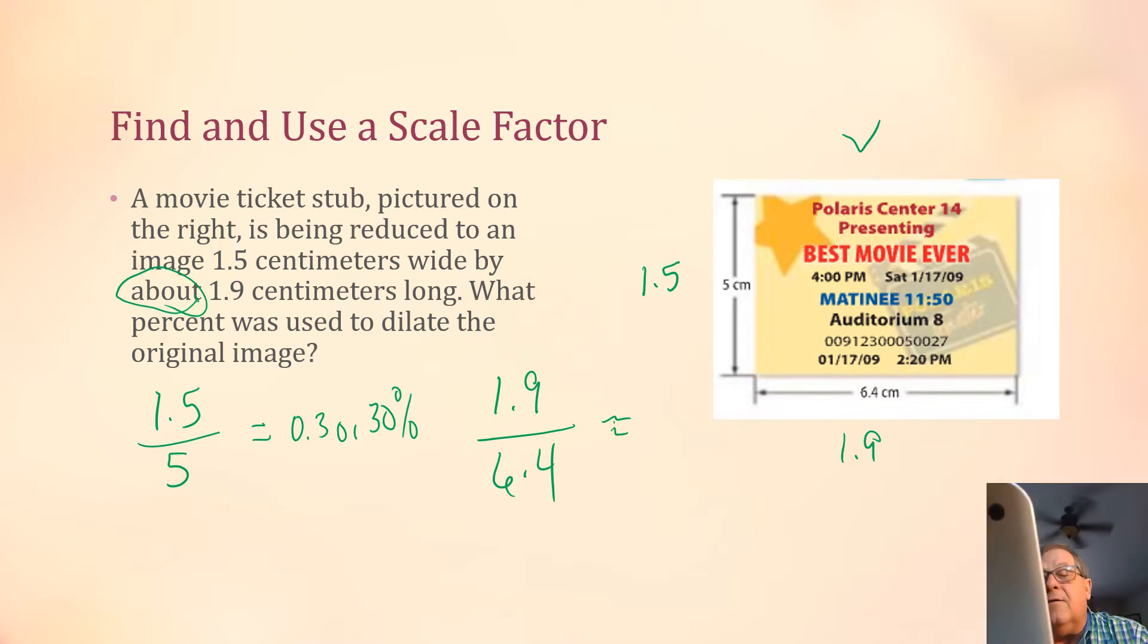And then 1.9 divided by 6.4 actually comes up to 0.296875. But if we round that, I can also get that to about 0.3 if I round that to the nearest tenth. And that's also going to be about 30 percent. So our reduced image had a scale factor of 0.3 or 30 percent from the original movie ticket stub.